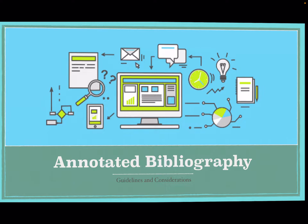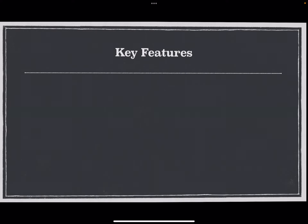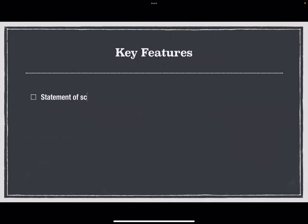Let's talk a little bit more about a bibliography. Here are some key features of an annotated bibliography. First of all, it should include a statement of scope. This is a brief introduction that explains what you're covering, explains your topic, gives a context for the bibliography, and announces the purpose for compiling the annotations.